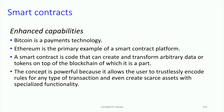A smart contract is code that can create and transform arbitrary data or tokens on top of the blockchain that it's part of. This allows us to trustlessly encode rules for any type of transaction, and even create assets from the smart contract.